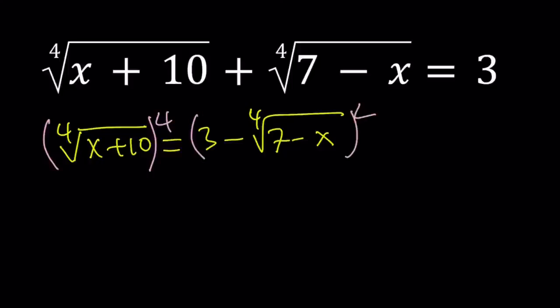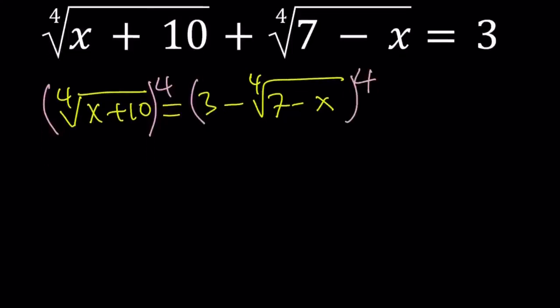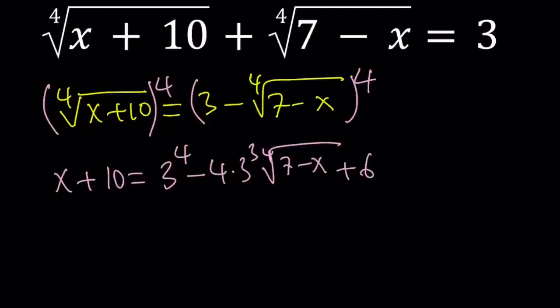I don't want to keep squaring it, so I'm going to go ahead and raise both sides to the fourth power. On the right-hand side, we kind of have to deal with binomial theorem. Remember the coefficients 1, 4, 6, 4, 1 from Pascal's triangle. Anyways, the left-hand side gives us x plus 10.